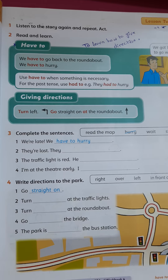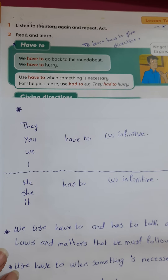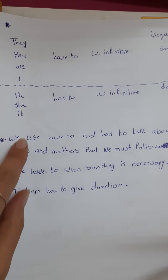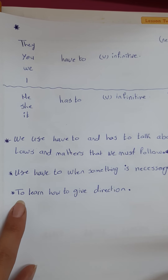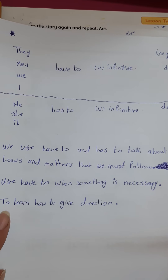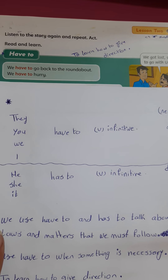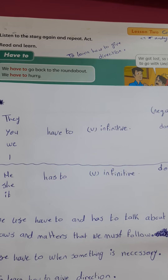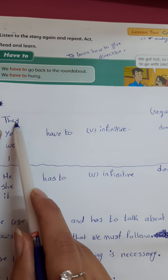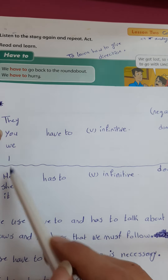Use 'have to' when something is necessary — في شيء حقيقي لازم نتبعه. كيف بدنا نستخدم 'have to' and 'has to'? This is the rule, three points for this grammar. Here is the structure of how we put it in the sentence. First, we put the subject: they, you, we, I, he, she.